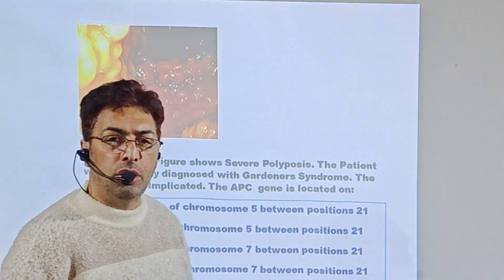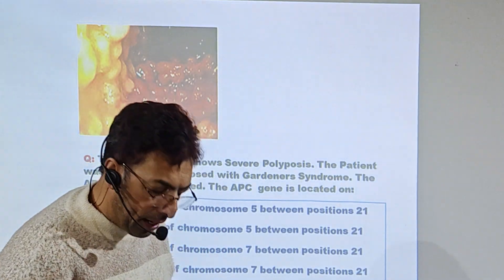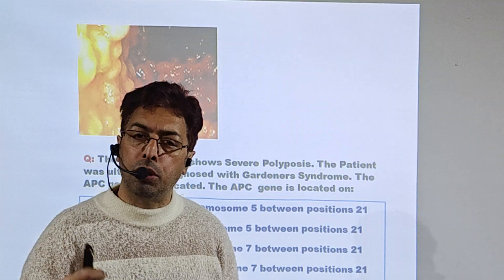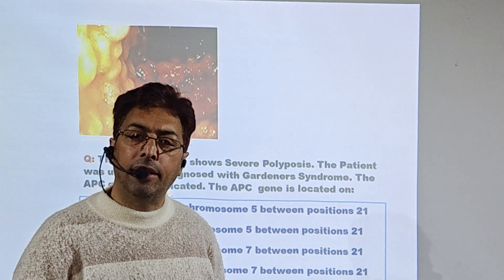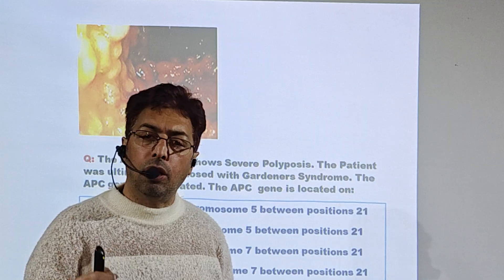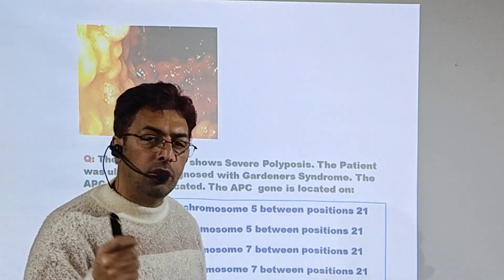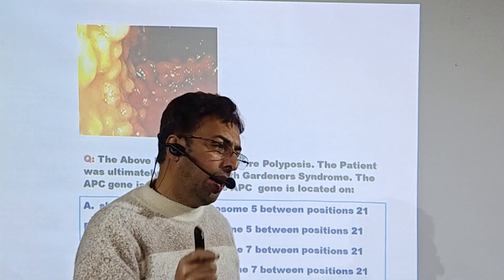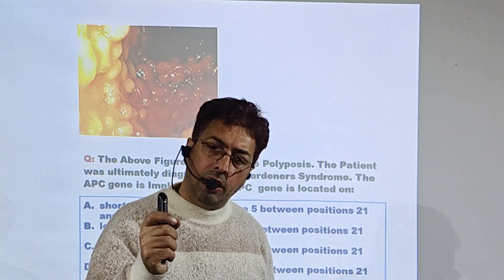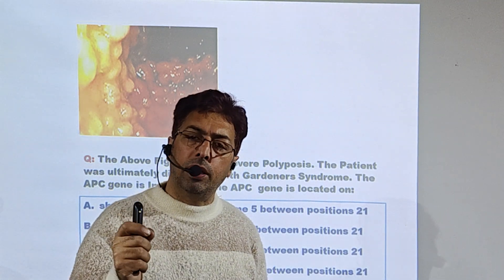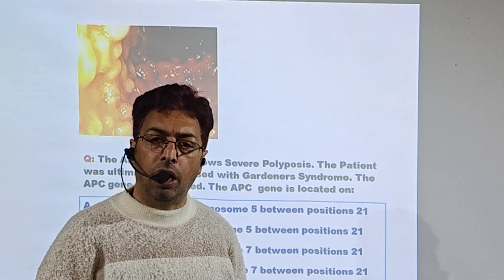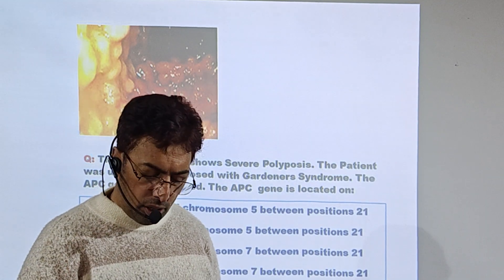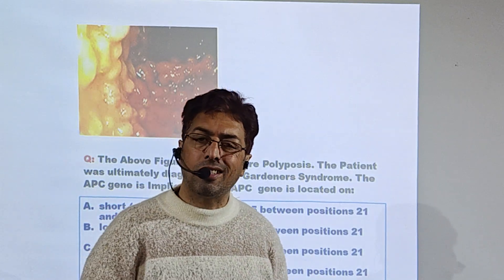The diagnosis is already given as Gardner syndrome — this is how questions are asked. Gardner syndrome is associated with soft tissue tumors, tumors of the bone, and dental abnormalities, especially osteomas of the mandible. It is characterized by polyps in the colon, soft tissue tumors, and osteomas — osteomas being the commonest bone tumor associated with Gardner syndrome. The gene implicated is the APC gene, located on the long Q arm of chromosome 5.